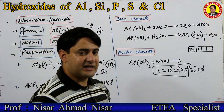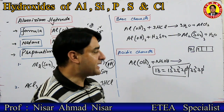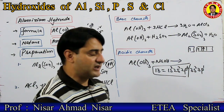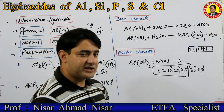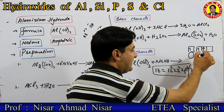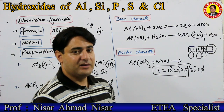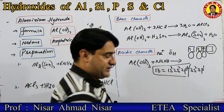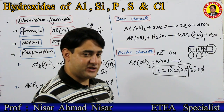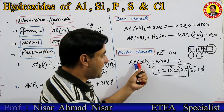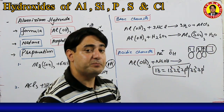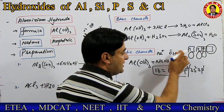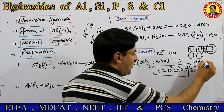Aluminium کے ساتھ تین hydroxyl groups attached ہوئے ہیں — یہ کیسے attached ہوئے؟ یہ والا electron یہاں سے jump کرے گا کیونکہ aluminium hydroxide میں covalent character زیادہ ہوتا ہے۔ تین partially filled orbitals تھے — تین hydroxyl نے ان کے ساتھ overlap کر کے bond بنا دیے۔ Aluminium کے پاس اب ایک empty orbital باقی ہے۔ Sodium والا hydroxyl ion جو negative ہے اس کے پاس lone pair of electrons ہے — یہ hydroxyl اس empty orbital کے ساتھ coordinate covalent bond بنائے گا۔